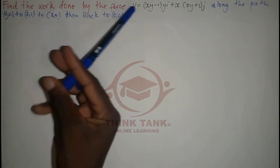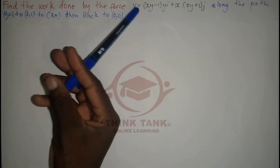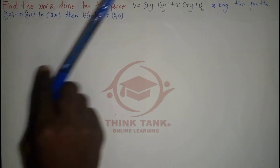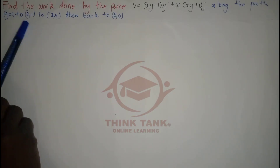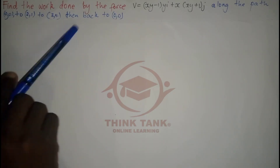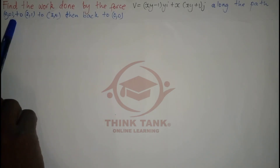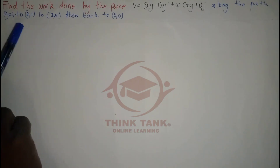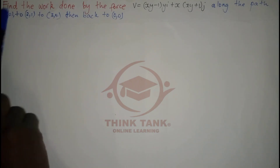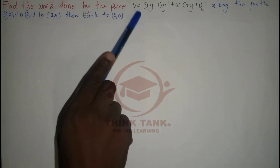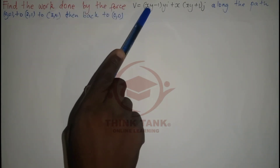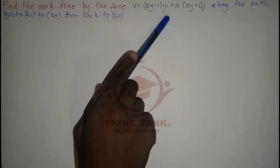I'm given the vector field of the force, and I'm given the path that the force took from (0,0) to (2,1) to (3,4), then back to (0,0). So before doing anything, we have to make sure that this vector field is not conservative.